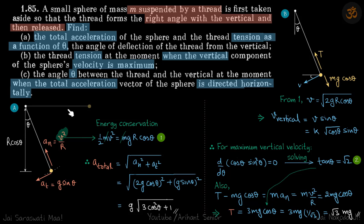We have a thread that was originally at right angles to the vertical and then it is dropped. We need to find: first, the total acceleration and tension as a function of theta; second, the tension when the vertical component of its velocity is maximum; and third, the angle theta when the total acceleration is horizontal. Let's solve one by one.